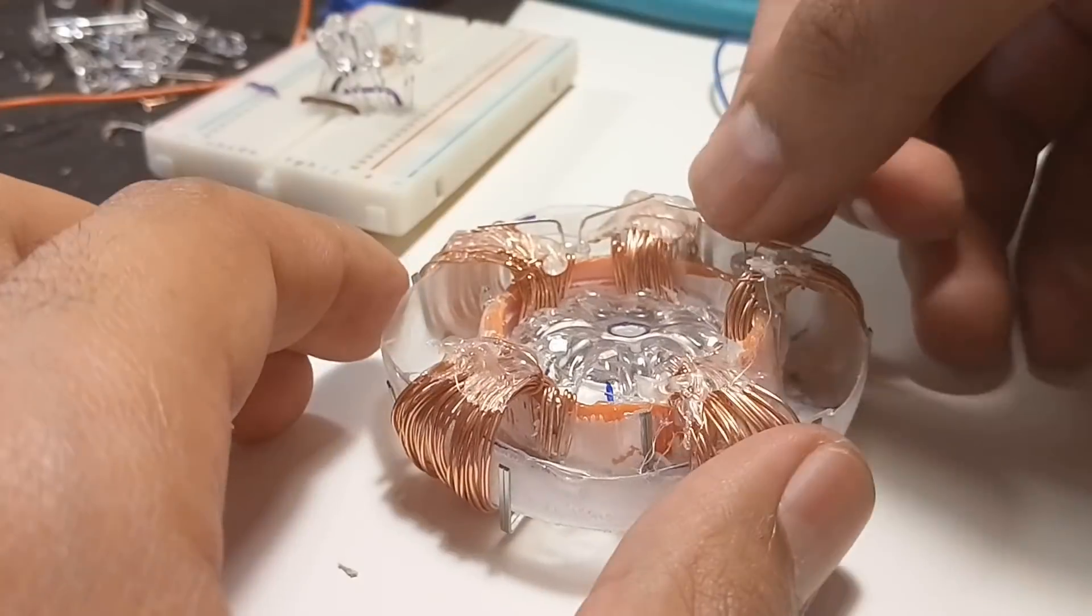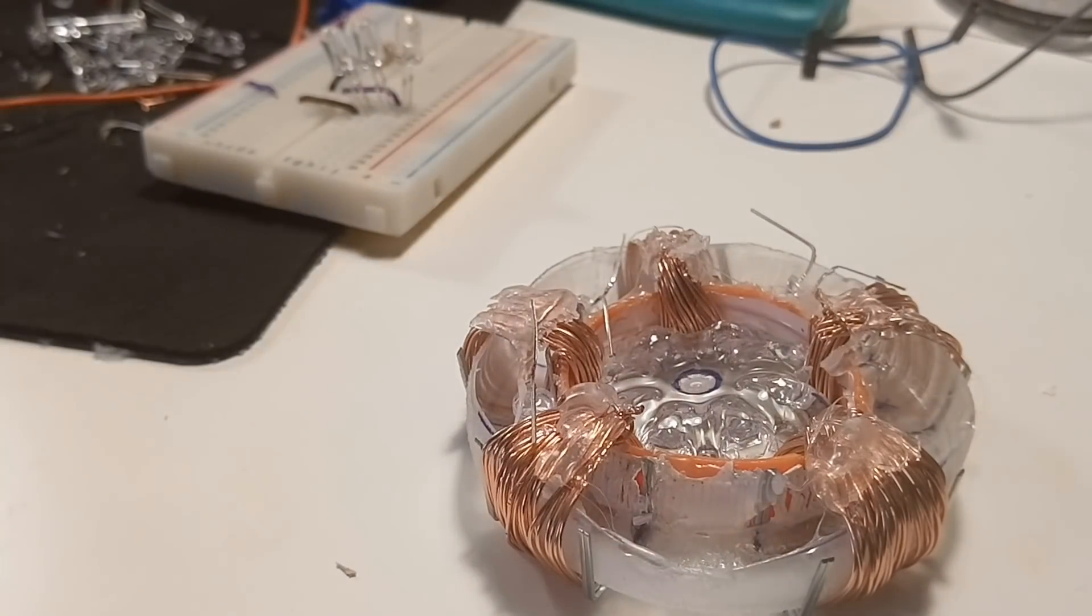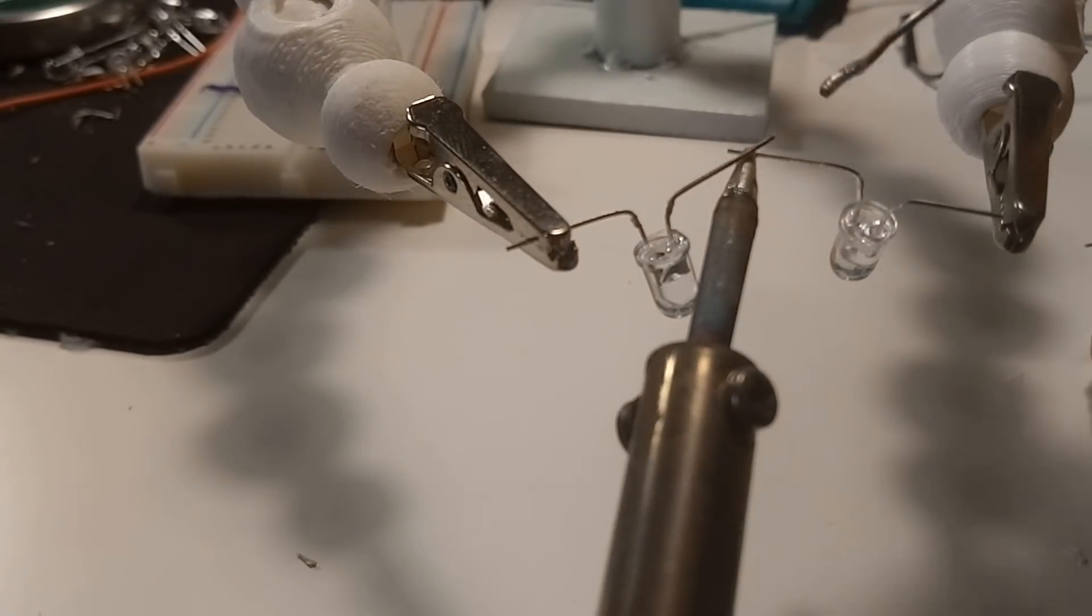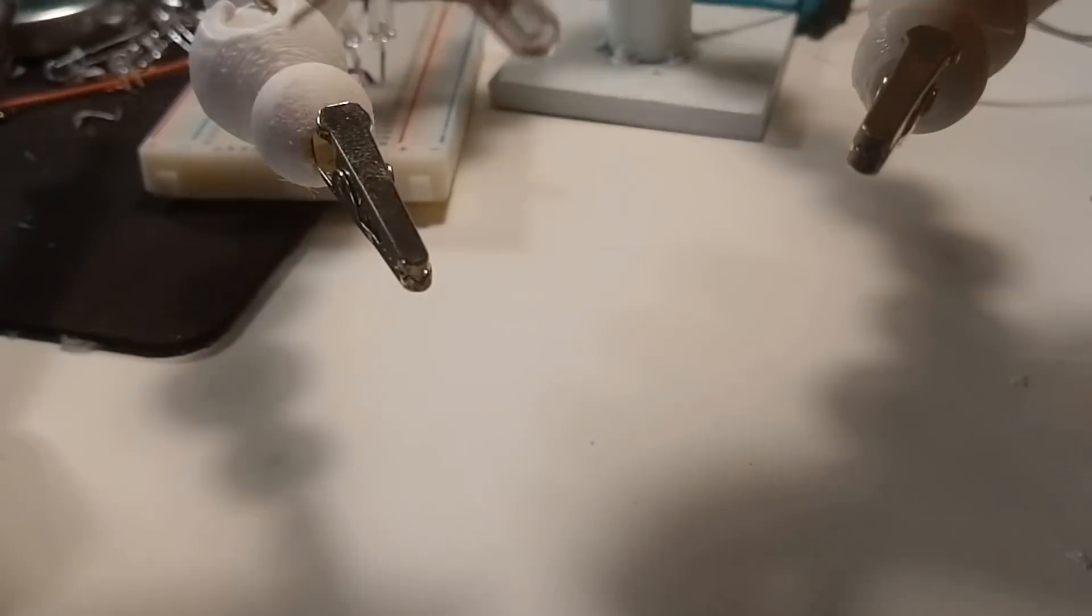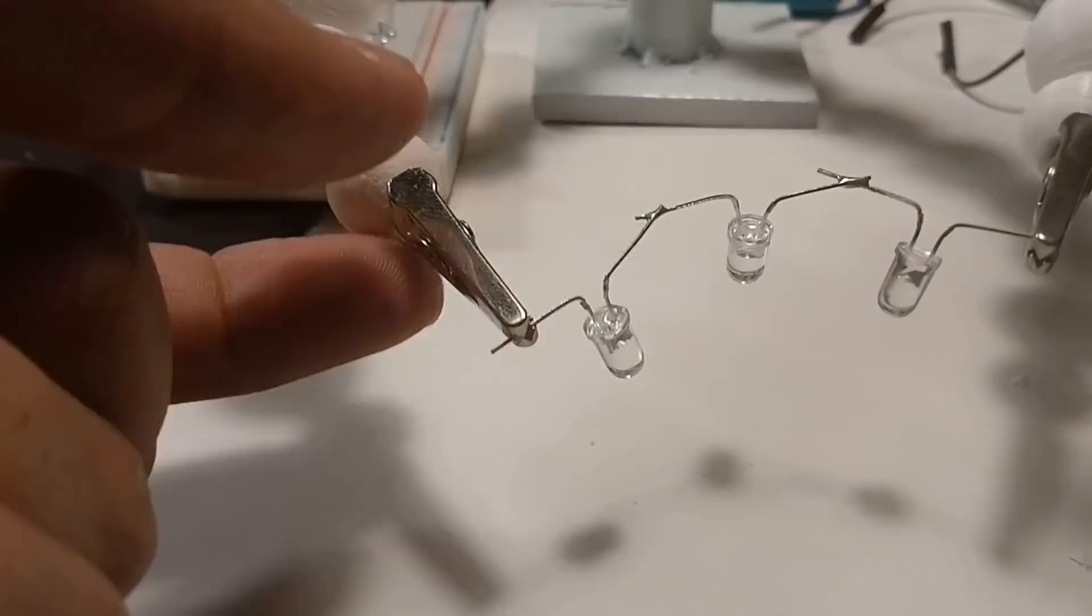A 9V battery would be perfect to power these up, as each LED needs 3V of forward voltage. So the setup looked like this: Two sets of 3 LEDs in series and the whole setup connected in parallel. If you're confused and would like to learn a little more about the series and parallel connections and LEDs in general, check out my video dedicated to this topic.